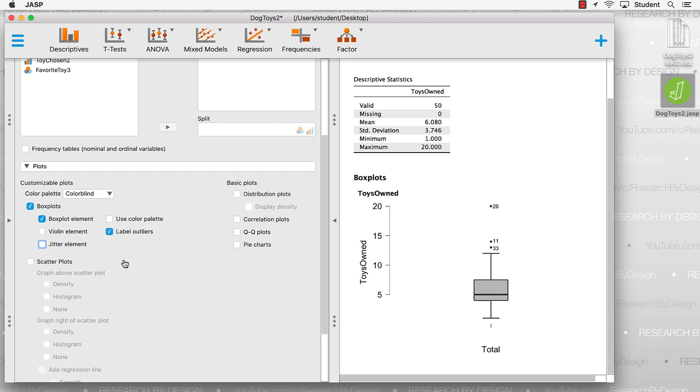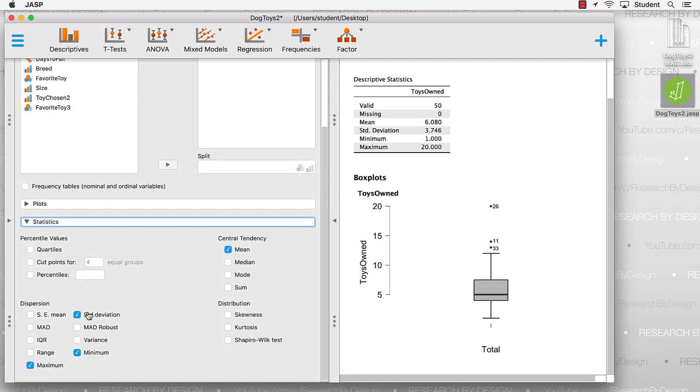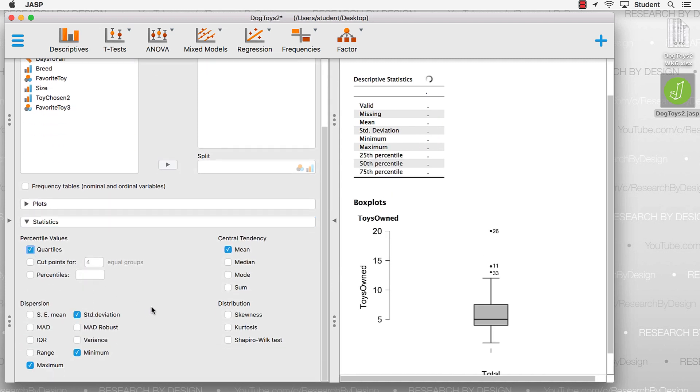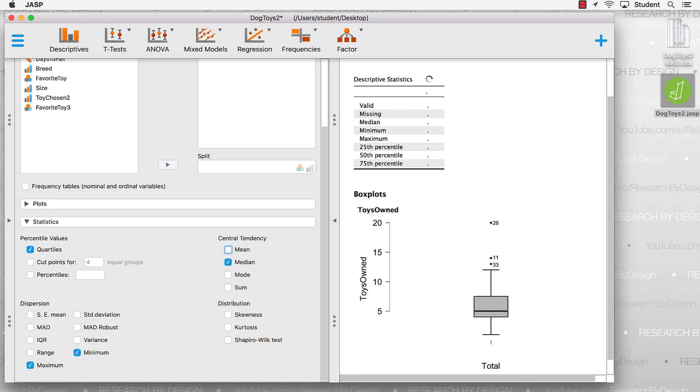Now, let's create our five-number summary. And, for this, we will use the statistics. The simplest way is just to click on quartiles. We can get the median, although the median will be included as the 50th quartile. And, of course, we need minimum and maximum. Turn off any other options that don't apply. And, when we look at our descriptive statistics output, we can see the elements of that five-number summary, and we can see our box plot.